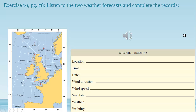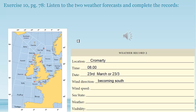Keep in mind, this is not easy. They don't tell you the location — you should just know it from knowing the different sea areas from the Met Office. And they don't say 'wind direction' or 'wind speed' — you just pick it up after hearing it many times. So it's a good idea we're doing this. The location is Cromarty, up on the very tip of the UK. The time was 0800 hours, the date 23rd of March. Wind direction: becoming south. Wind speed: 3 to 4, becoming 5 to 7. Sea state: slight or moderate, occasionally rough. Weather: fair. Visibility: good.